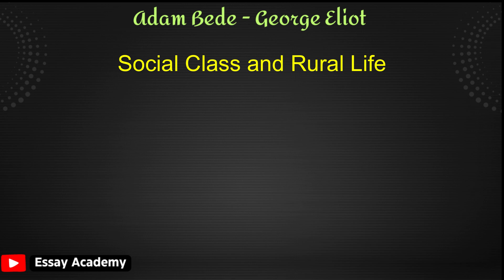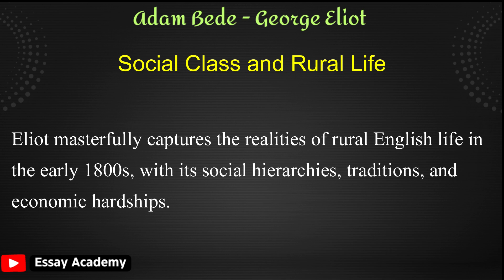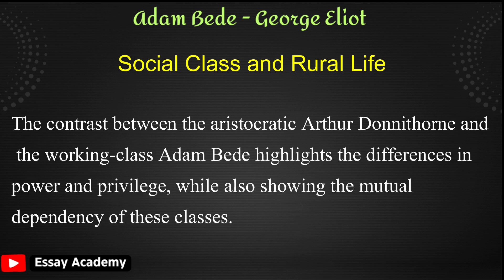Social Class and Rural Life: Eliot masterfully captures the realities of rural English life in the early 1800s, with its social hierarchies, traditions, and economic hardships. The contrast between the aristocratic Arthur Donnythorne and the working-class Adam Bede highlights the differences in power and privilege, while also showing the mutual dependency of these classes.